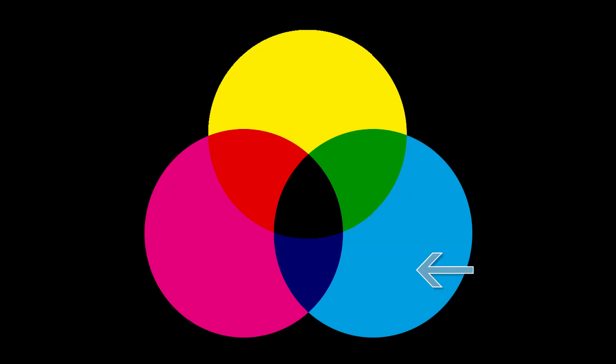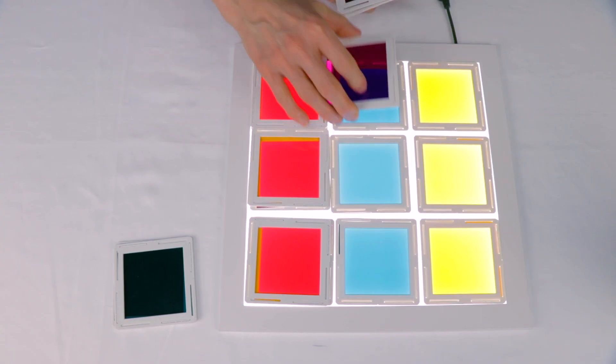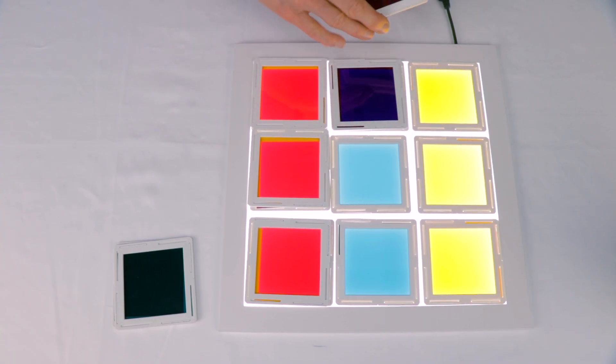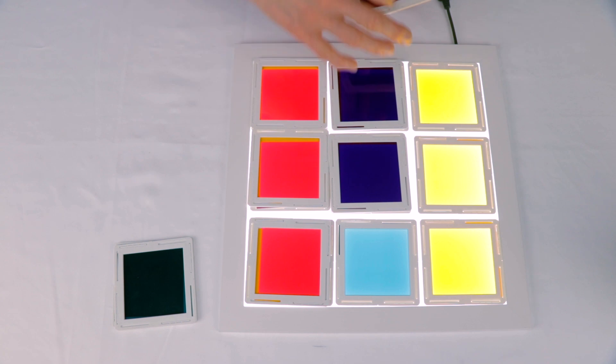Let's move on to the cyan column. The cyan filter is absorbing red color and allowing green and blue to pass through. So we would need to place a magenta on top, because we now know that magenta allows red and blue to pass through, and when placed on top, it turns blue.